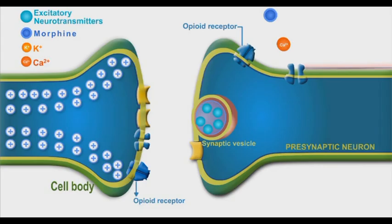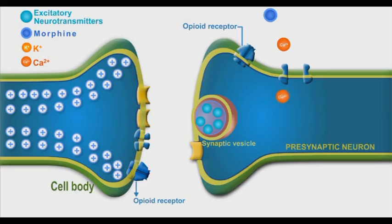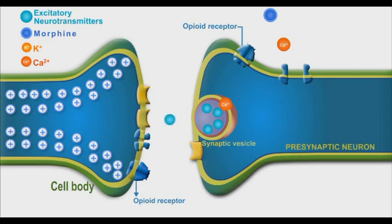Naturally, the opening of presynaptic calcium channels enhances the calcium influx into the nerve cells. Calcium ions stimulate the release of excitatory neurotransmitters from their storage vesicles.